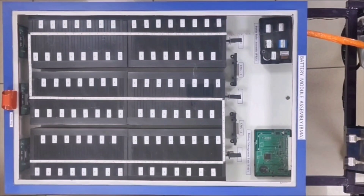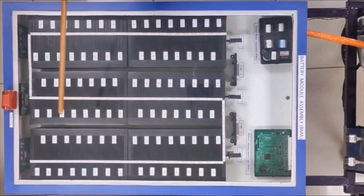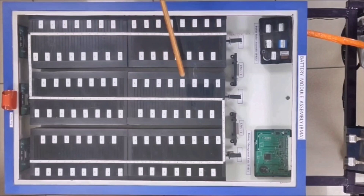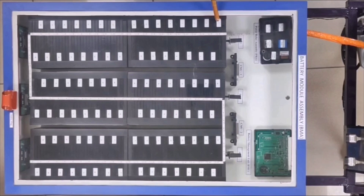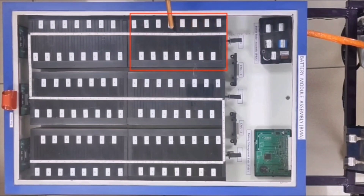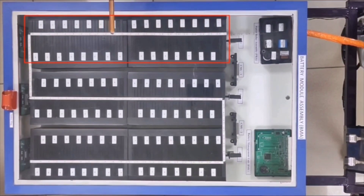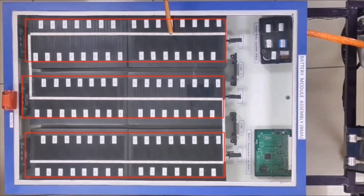Let us look at the configuration of the high voltage battery. It consists of cells — this assembly has a total of 180 cells, with one battery having two cells. When 15 batteries are combined, it becomes one battery module assembly. Two battery modules combined are called one battery pack, and here there are three battery packs.